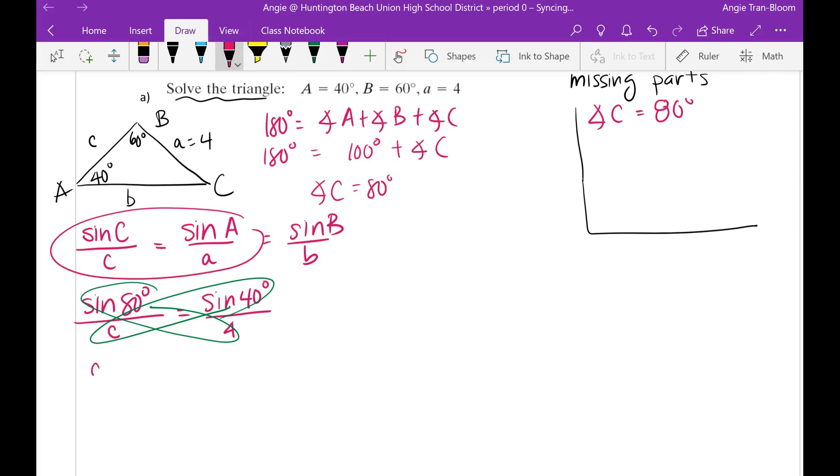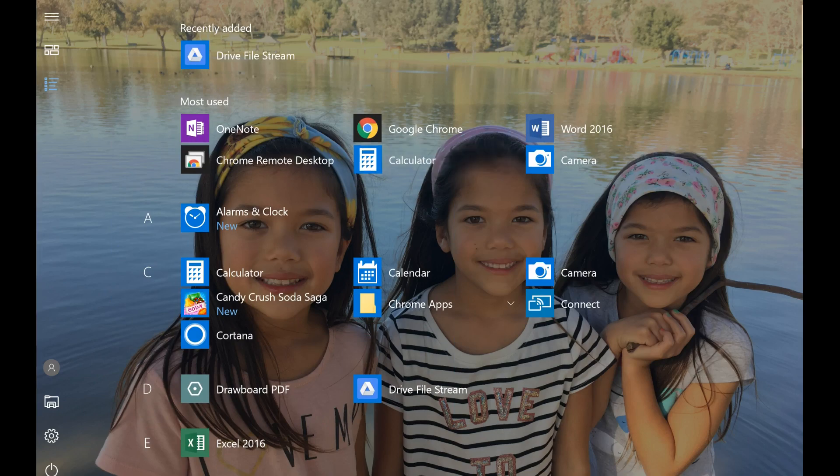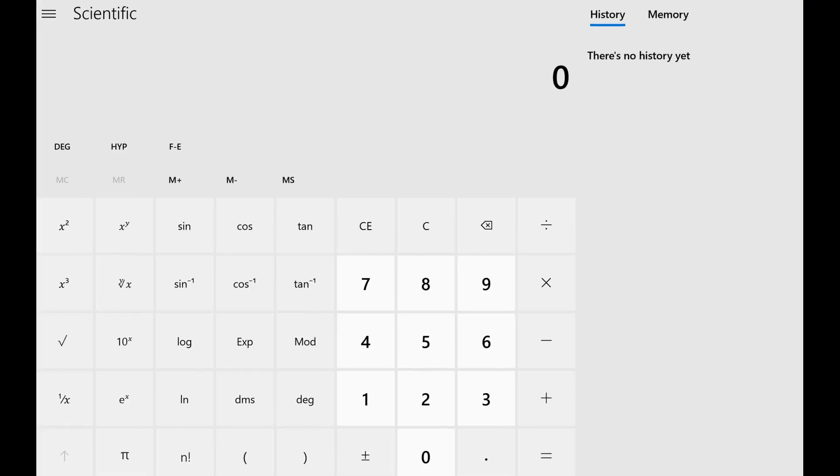So this will give me C sine of 40 degrees equals 4 times sine of 80 degrees. You need to change your calculator into degrees because this has a degree symbol. Decide to divide both sides by sine of 40. So now I need to bust out my calculator. C is going to be rounded to two decimal places. So let me find my calculator. Where is the calculator? There it is.